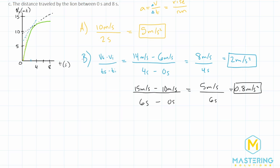But now for part C, they say, what is the distance traveled by the lion between zero and eight seconds? So for this one, what we have to do is find the area underneath the curve. And since this line is truly actually a curve, we have to estimate.